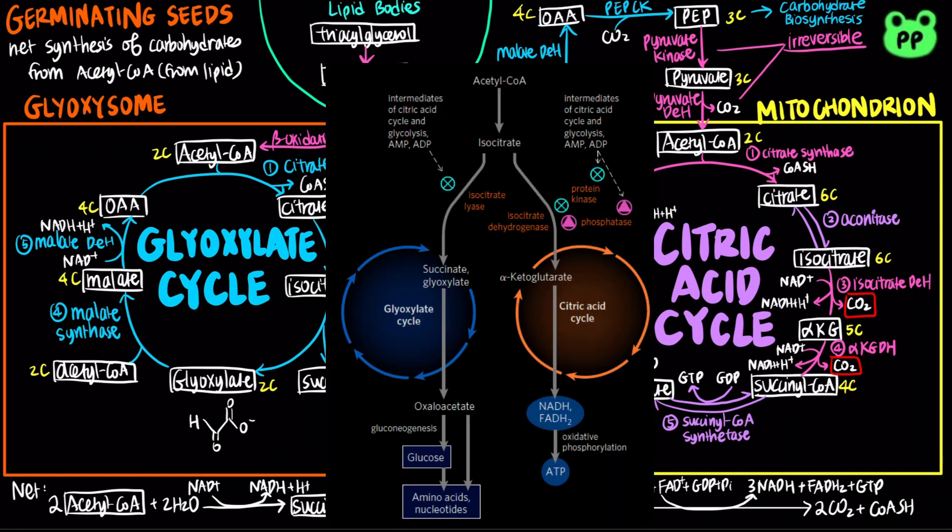The partitioning of isocitrate between the citric acid cycle and the glyoxylate cycle is controlled at the level of isocitrate dehydrogenase, since the two cycles share their first two steps.